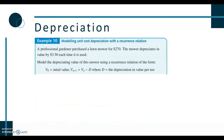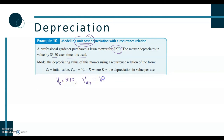The next example involves unit cost depreciation. A gardener purchased a lawnmower for $2,700 and it depreciates by $3.50 each time it is used. Representing that as a recurrence relation: V0 = 2700, Vn+1 = Vn − 3.50. Unit cost follows the same linear style.